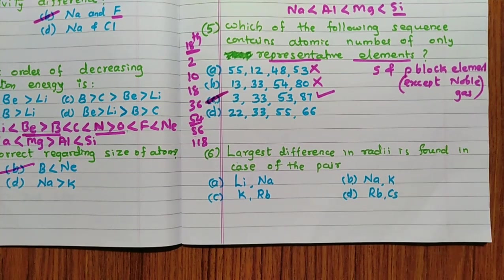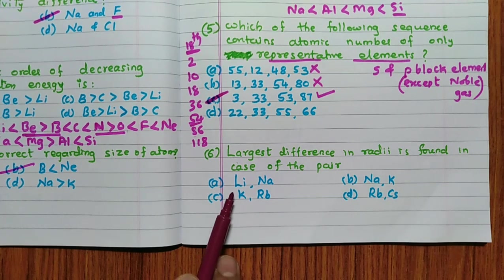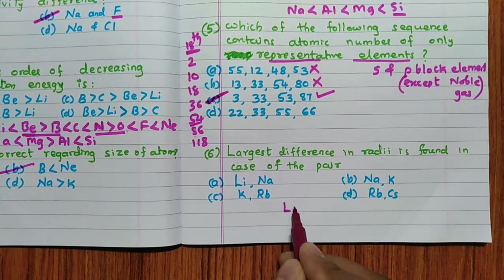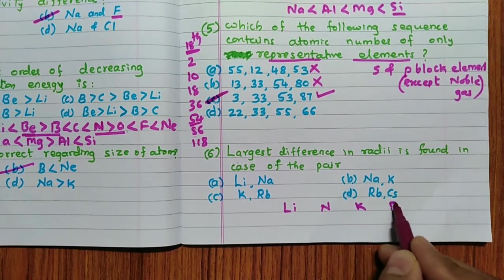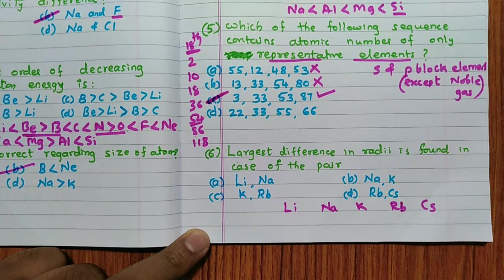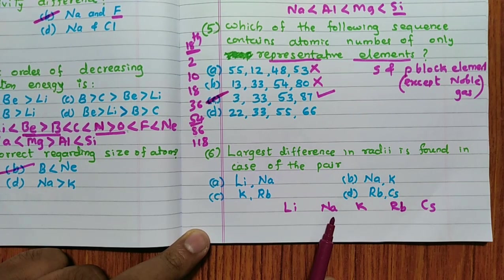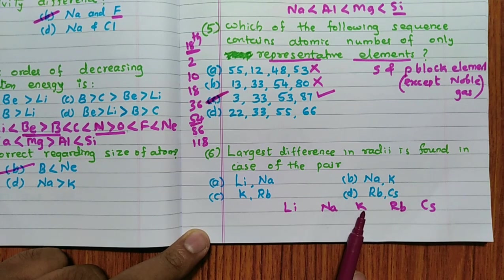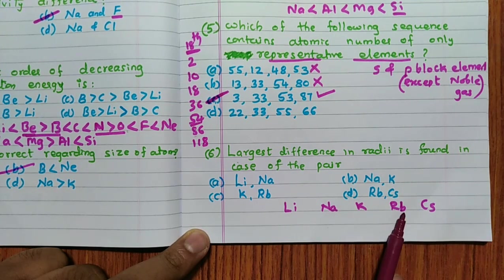Question six: the largest difference in radii is found in which pair? This looks simple but you have to remember this type of question. All options involve alkali metals — lithium, sodium, potassium, rubidium, and cesium — all S-block elements. One important point: from lithium to sodium there is an increase in radius, but this increase is not as much compared to sodium to potassium. Sodium to potassium shows the largest increase compared to other consecutive pairs.